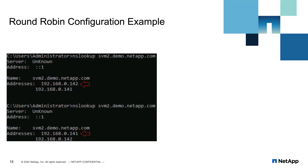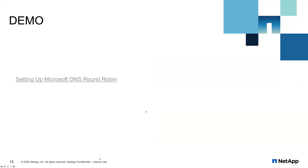The big takeaway from this slide is it shows you how round robin works. An nslookup for svm2 was executed and you'll notice it returns both addresses, but it's the one on top that counts — the client is always going to pick the one on top. A subsequent nslookup for the same name actually returns .141 the next time. So it just bounces back and forth between the two.